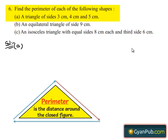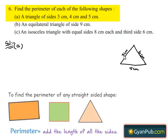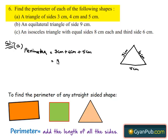Let us consider a triangle. Given length of sides are 3 centimeters, 4 centimeters, and 5 centimeters. The perimeter is nothing but the sum of the sides of the triangle. So perimeter is equal to 3 centimeters plus 4 centimeters plus 5 centimeters.